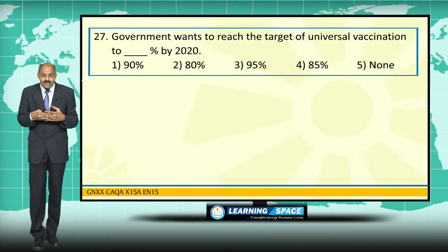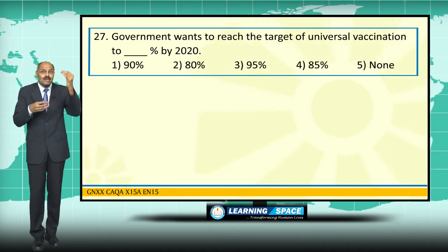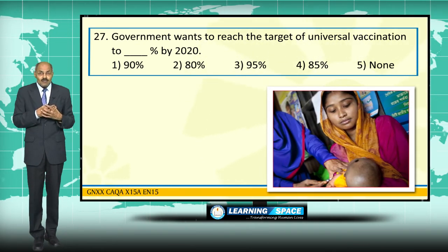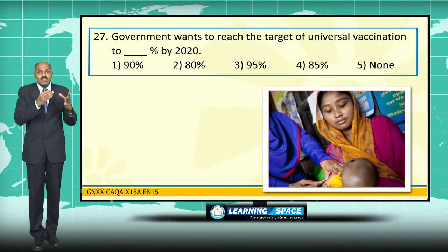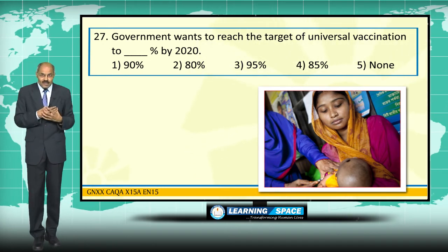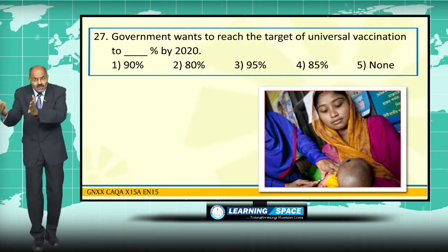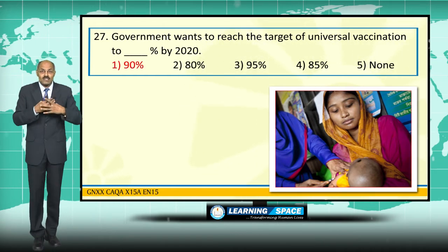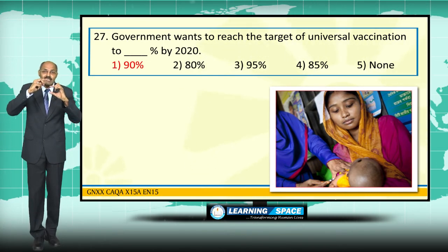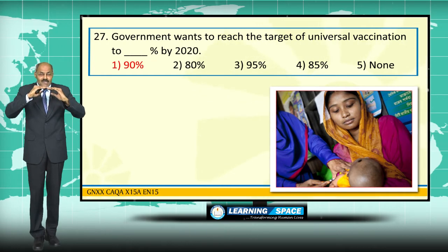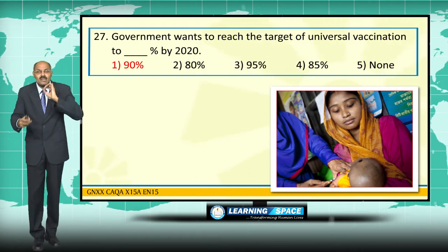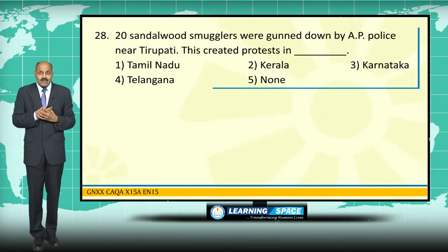The government wants to reach the target of universal vaccination coverage of 90 percent by 2020 through a program called Mission Indradhanush. At present the vaccination coverage in the country is 65 percent, and the government wants to increase it by 5 percent every year to reach 90 percent by 2020.